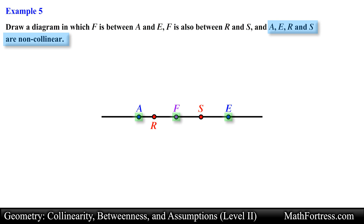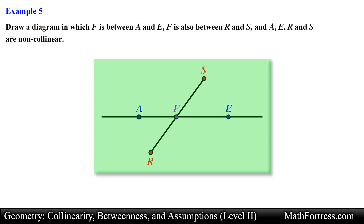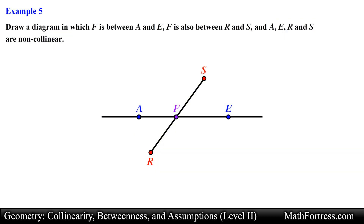We know that points A, E, and F must be collinear, and points R, F, and S are also collinear. Since points A, E, R, and S are non-collinear, we need to adjust either points A and E or points R and S to avoid having four collinear points. So one possible diagram would be two line segments intersecting at point F, and this is our final answer. In our next video we will go over more challenging examples.